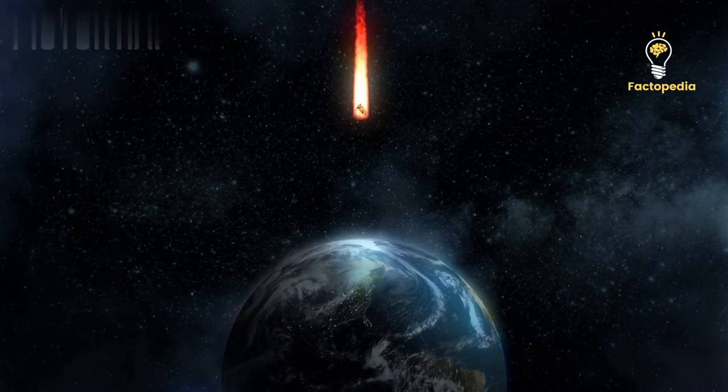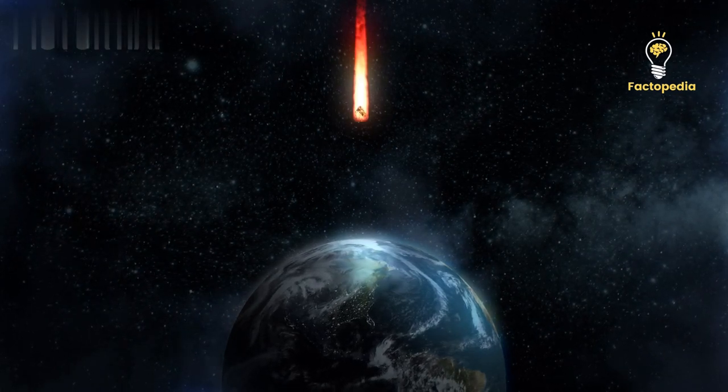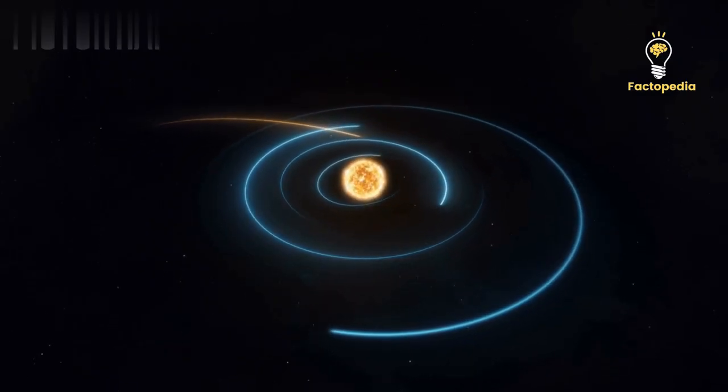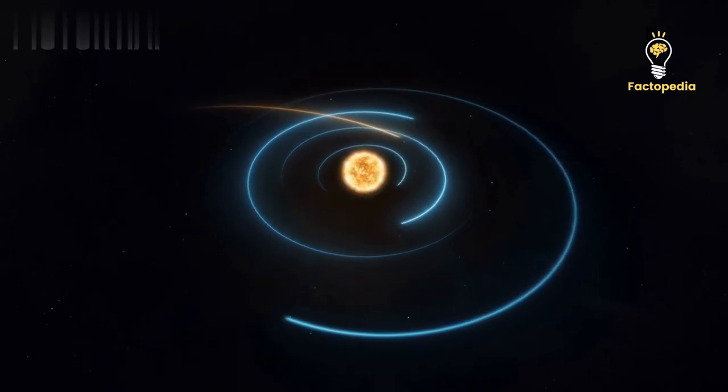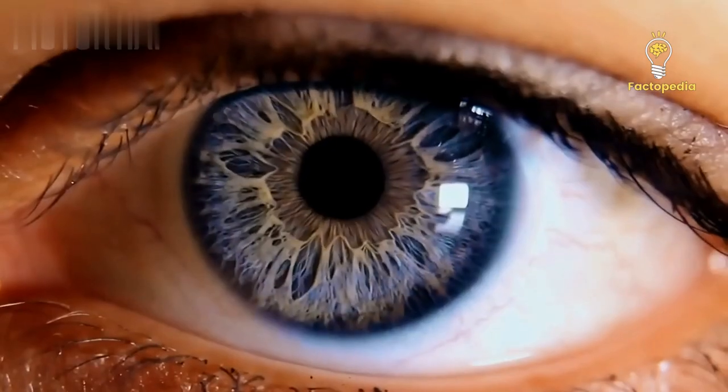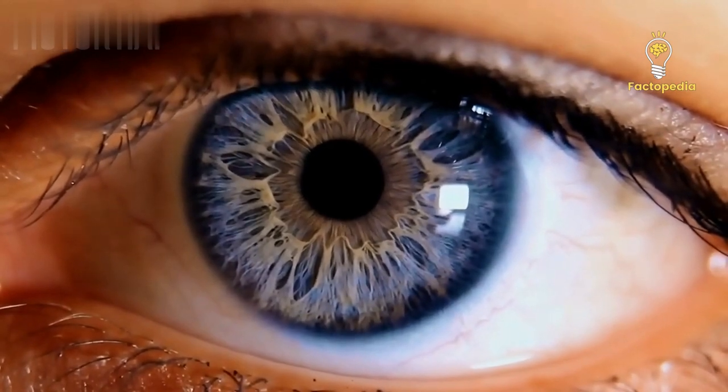A dazzling comet heading towards Earth could be brighter than any star in the night sky. It was first discovered in 2023 when it was quite far from our planet, about 7.3 times the distance between the Earth and the Sun. Although it was too faint to see with the naked eye at first.